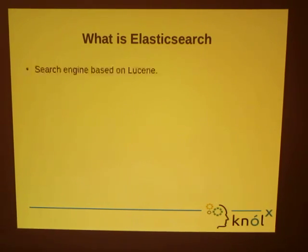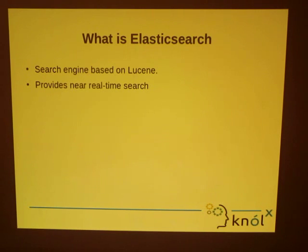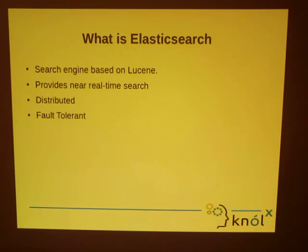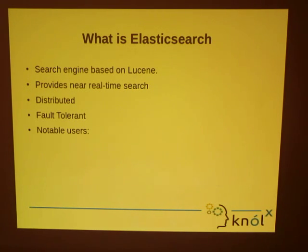What is Elasticsearch? It is a search engine which is based on Lucene. It allows you to explore your data at speed. It provides near real-time search and the response time is in milliseconds. It is distributed — several servers can be started at different locations and the data stored in them would be distributed and fault tolerant. If any node fails, the other node can perform your query and give you the results. The notable users of Elasticsearch are Facebook, GitHub, European Centre for Nuclear Research, and LinkedIn.